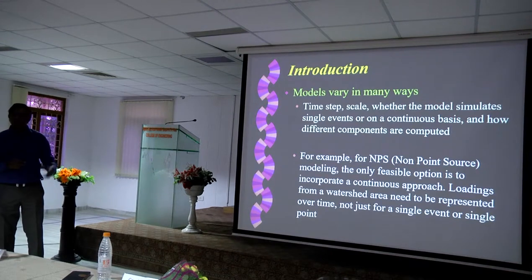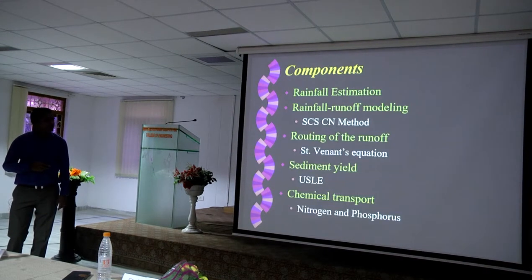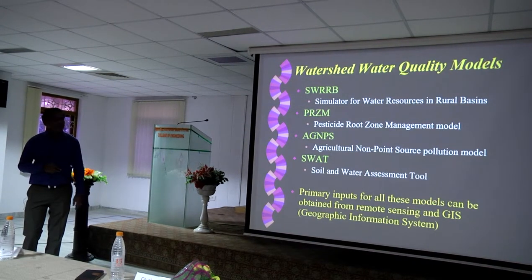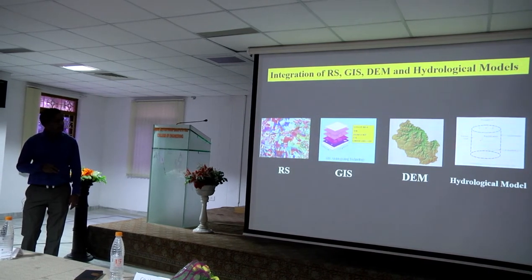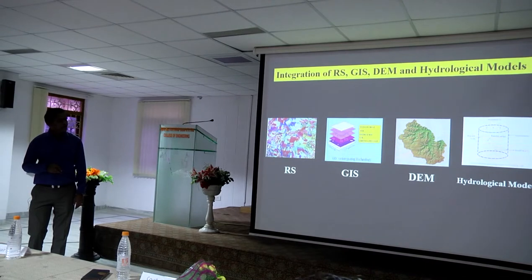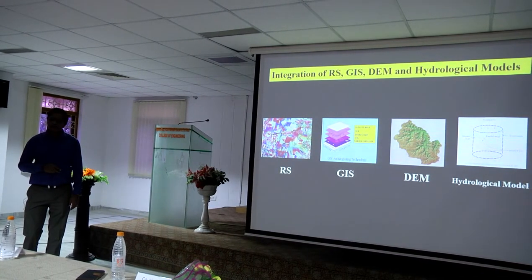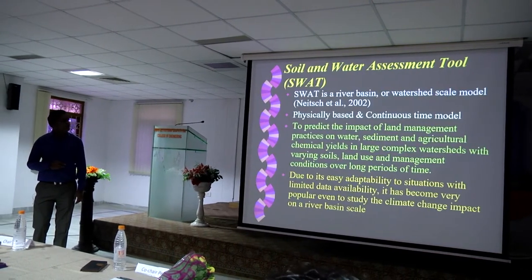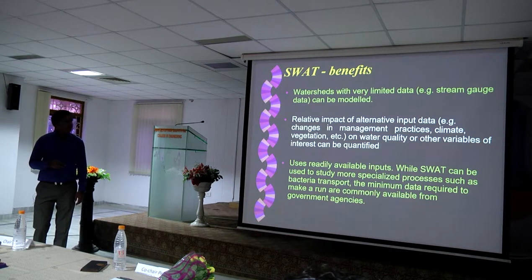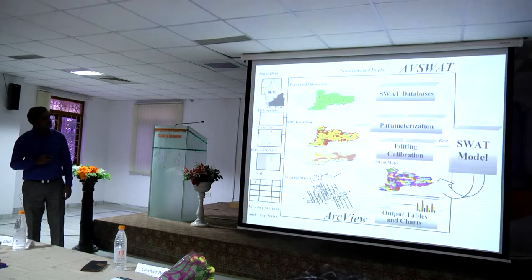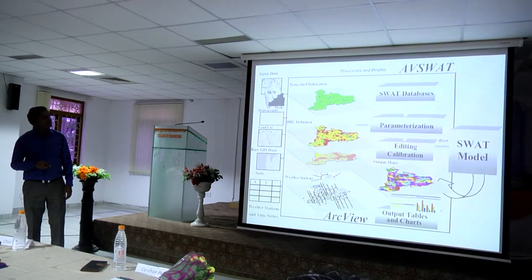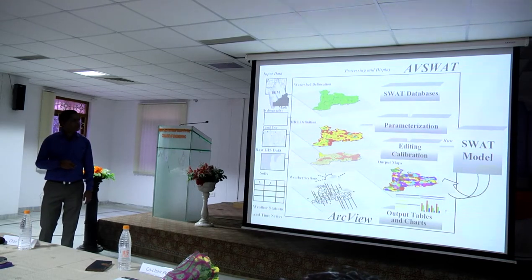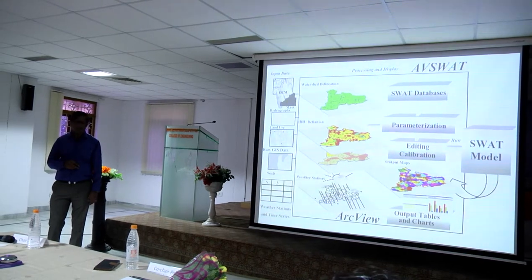We now put all these inputs — remote sensing, GIS, and DEM — into hydrologic models. There are a large number of models, but I will demonstrate one: the SWAT model. What we try to do is combine remote sensing for drainage information, GIS to integrate all layers, DEM for elevation data, and a hydrologic model. The SWAT model stands for GIS-supported Soil and Water Assessment Tool. All the inputs come from remote sensing, DEM, and ancillary databases. From that, we combine them and use this for calibration as well as validation of the model.